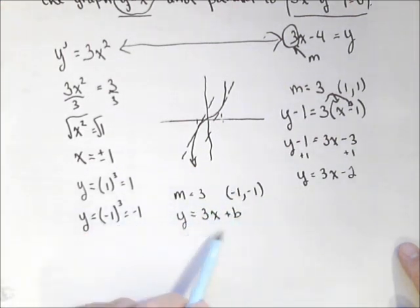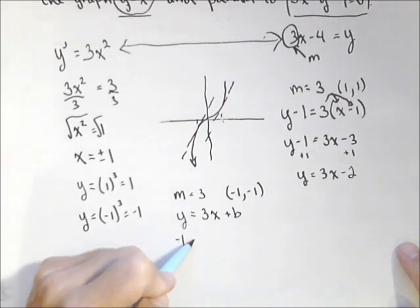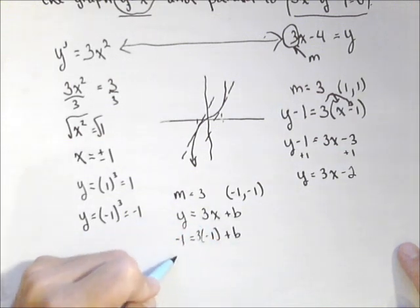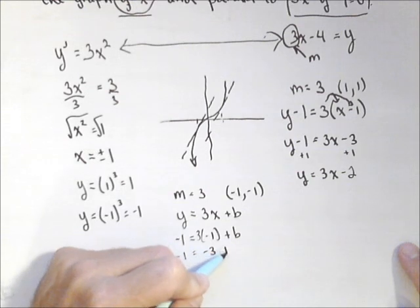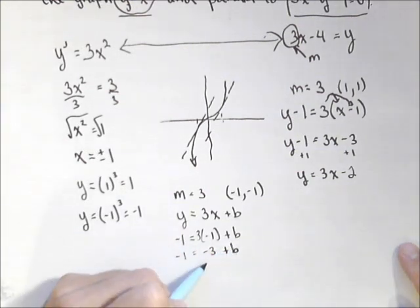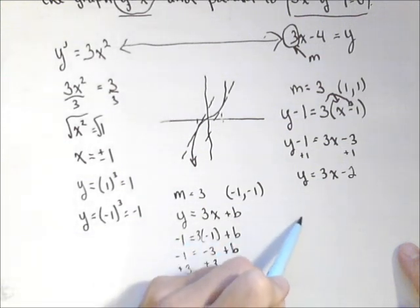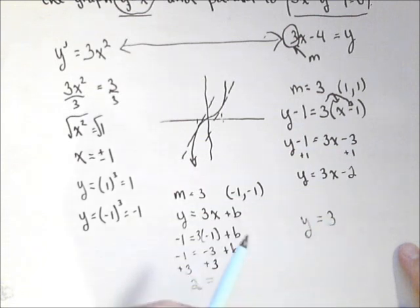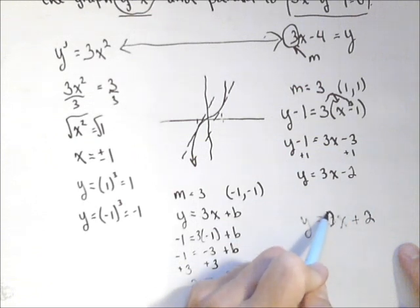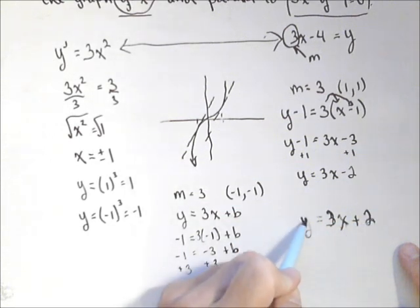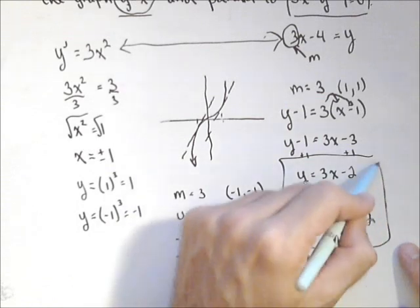And now we're going to plug in this point to figure out what b should be. We know that when y is negative 1, x is negative 1. So negative 1 equals negative 3 plus b. And there's going to be a lot of symmetry here. Add 3 to both sides. And we get b equals 2. So the other solution is y equals 3x plus 2. 3x plus 2. And there are our two tangent lines.